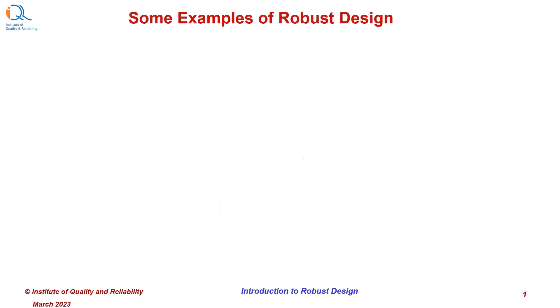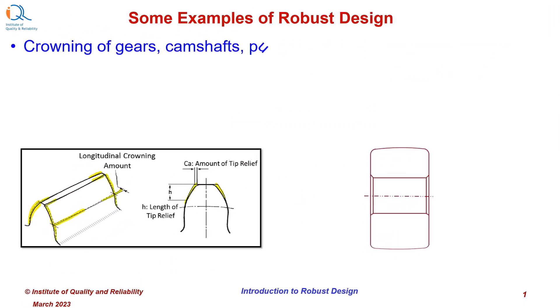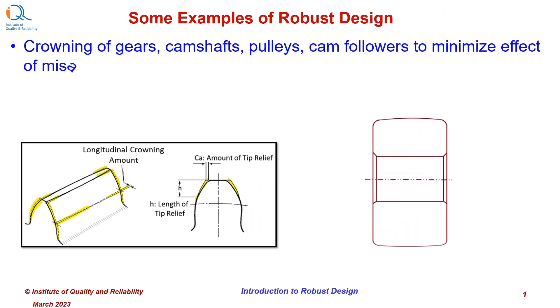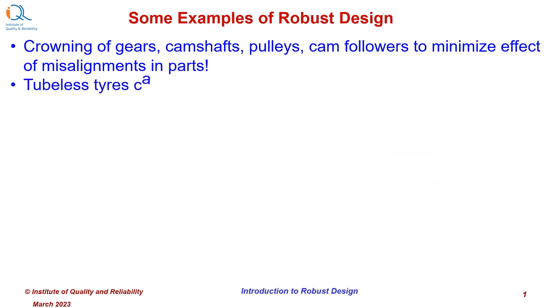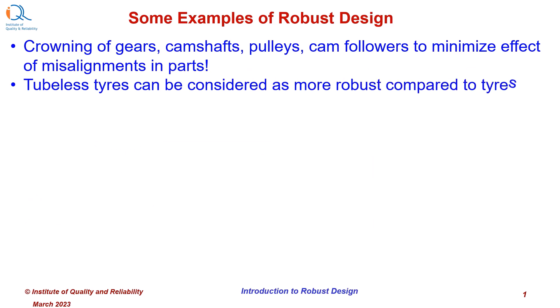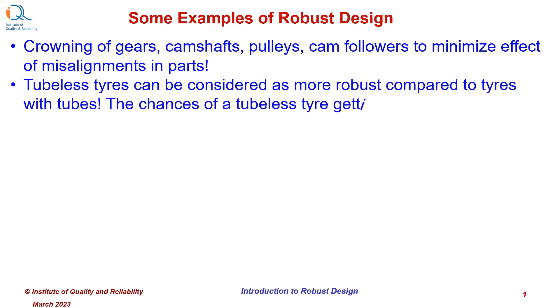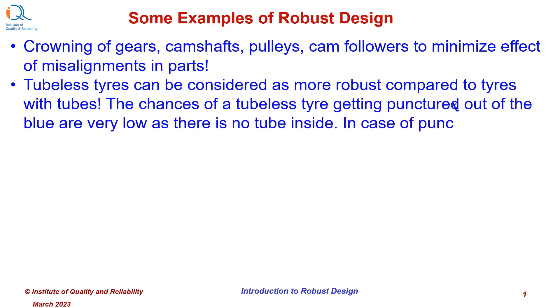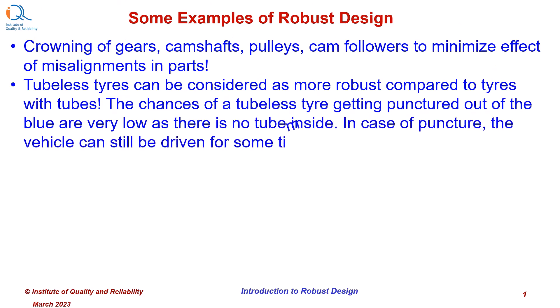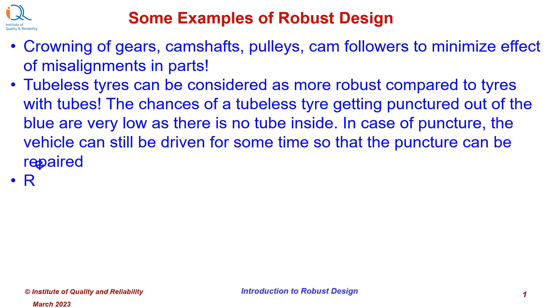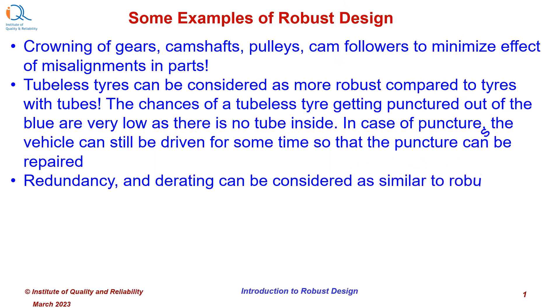Here are some common examples of robust design. Crowning of gears, camshafts, pulleys, and cam followers to minimize the effect of misalignments in parts is regularly done, and we can say this is a kind of robust design. Tubeless tires can be considered more robust compared to tires with tubes. The chances of a tubeless tire getting punctured suddenly are very low as there is no tube inside. In case of puncture, the vehicle can still be driven for some time so the puncture can be repaired. Redundancy and derating can also be considered similar to the idea in robust design.